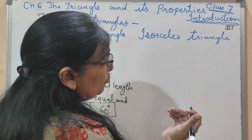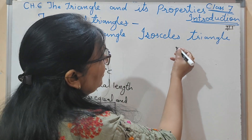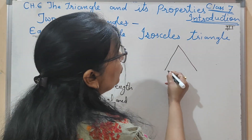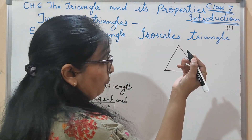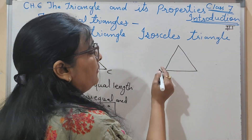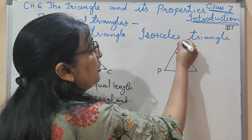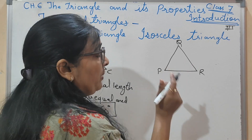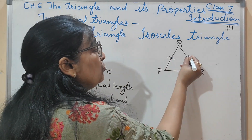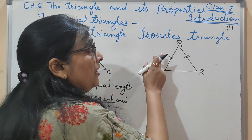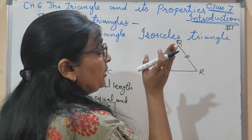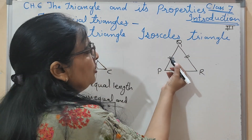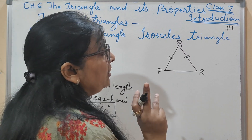Now the second is isosceles triangle. So isosceles triangle kya hote hain? In a triangle, if two sides are equal — suppose I am taking here triangle PQR — then in this triangle, these two sides are equal. In an isosceles triangle, those two sides are equal in length.